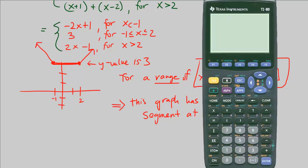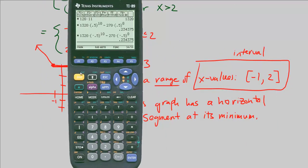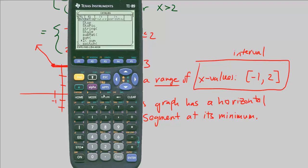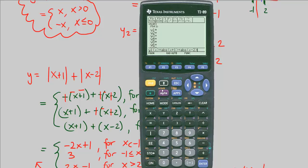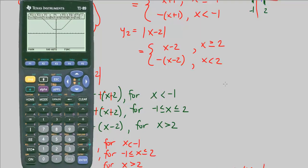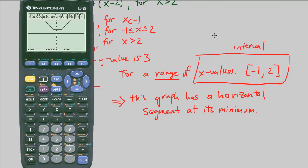Let's verify using a calculator. Going to Y= and using the catalog to get the absolute value function — ABS — I'll enter absolute value of x plus 1, plus absolute value of x minus 2. Graphing it, we can see the result just as we derived: the minimum y value is 3, spanning from x equals negative 1 to x equals 2, with a horizontal segment visible.